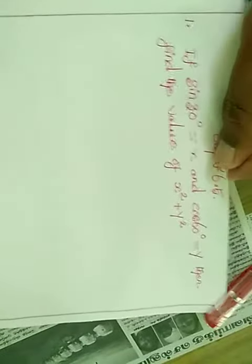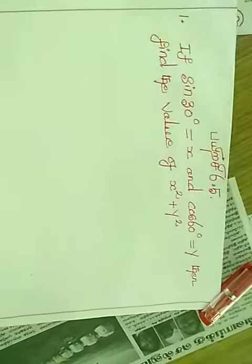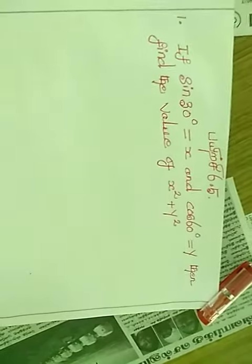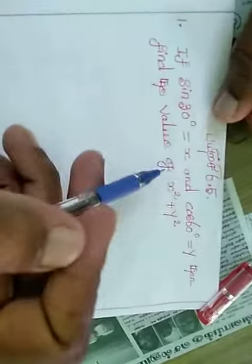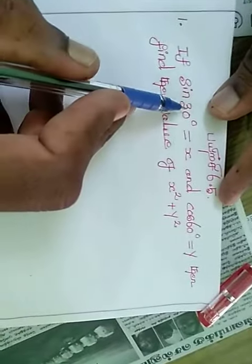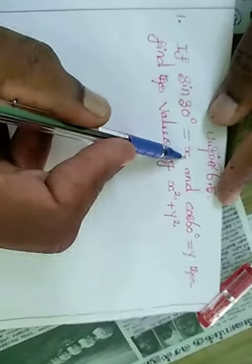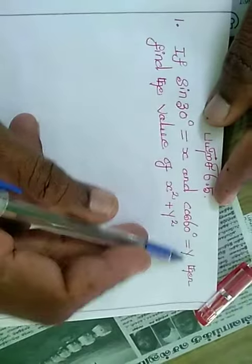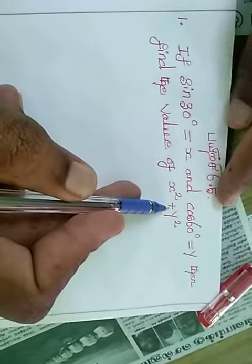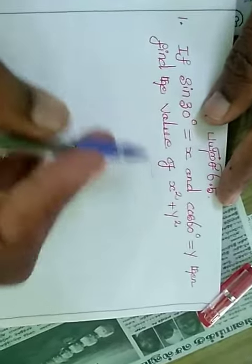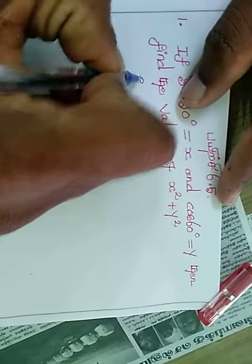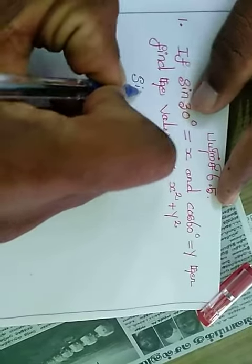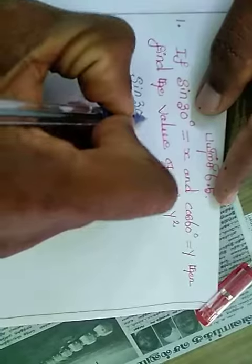Good morning, 9th standard students. Now we are going to see Exercise 6.5, one mark questions. Listen please — the question: if sin 30 degree is equal to x and cos 30 degree is equal to y, then find the value of x square plus y square.